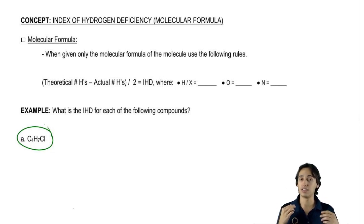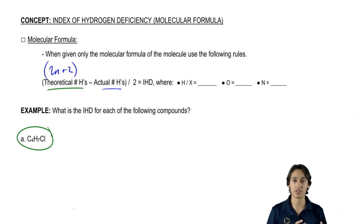But this is the way it works. Basically, we need to calculate IHD and the way we do that is by calculating the theoretical H's. The way we do that is by using the formula 2n plus 2. Basically, we calculate 2n plus 2, then we subtract the actual number of hydrogens.